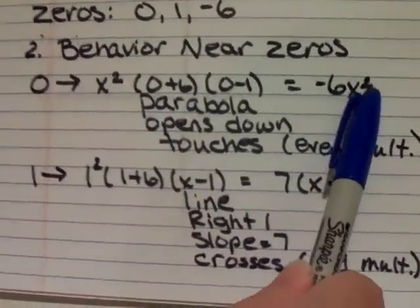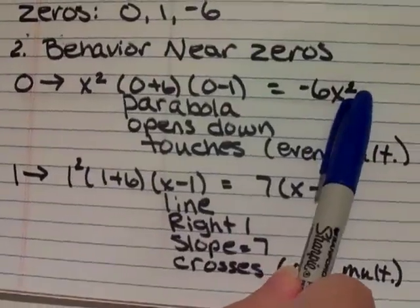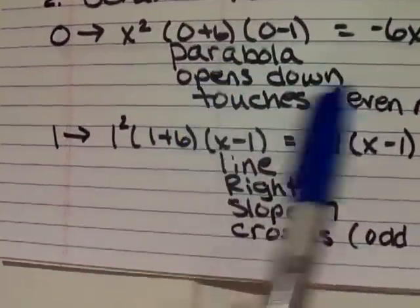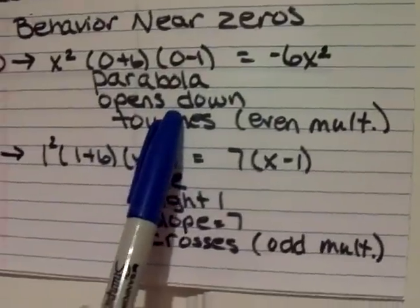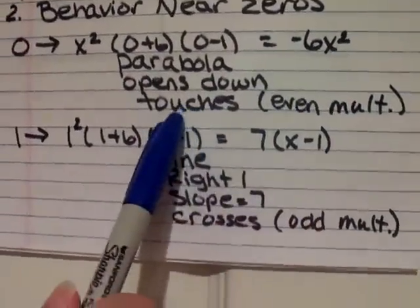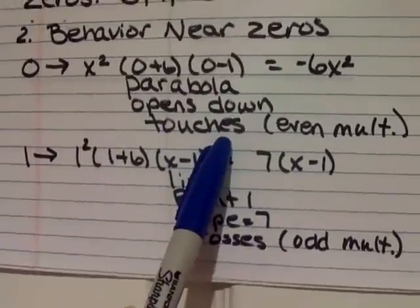Now to find that behavior, we look at the variable degree. And this is an even degree, so it's going to be a parabola. And we have a negative, so we know that it opens down. When you have an even multiplicity, or an even multiple on the degree, it's going to touch the graph, not cross. So we know that it touches.